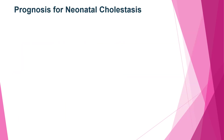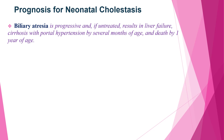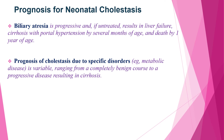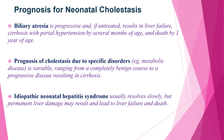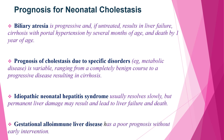Overall, regarding the prognosis for neonatal cholestasis, biliary atresia is progressive and if untreated results in liver failure and cirrhosis with portal hypertension by several months of age and death by one year of age. Prognosis of cholestasis due to specific disorders such as metabolic disease is variable, ranging from a completely benign course to progressive disease resulting in cirrhosis. Idiopathic neonatal hepatic syndrome usually resolves slowly, but permanent liver damage may result, leading to liver failure and death. Gestational alloimmune liver disease has a good prognosis with early intervention.